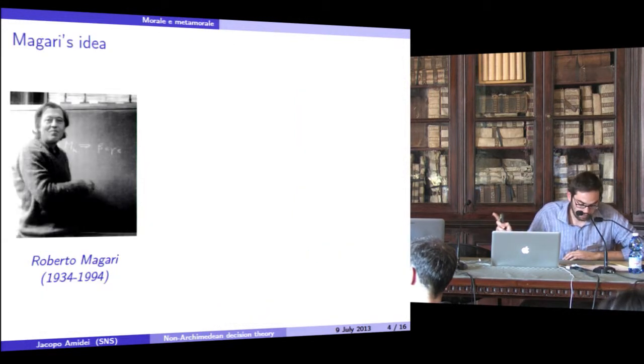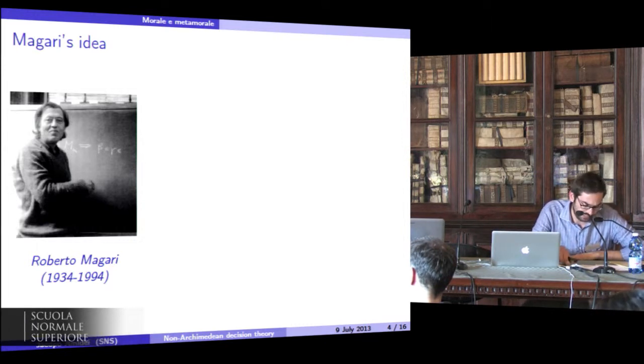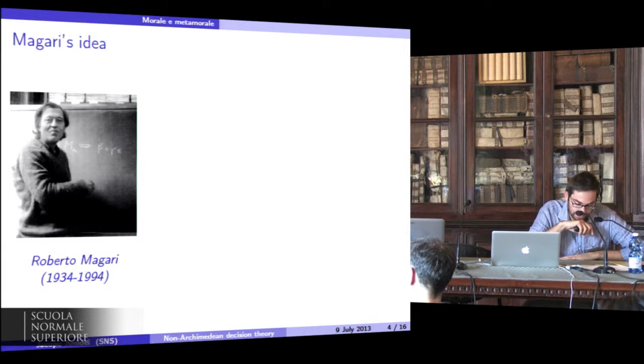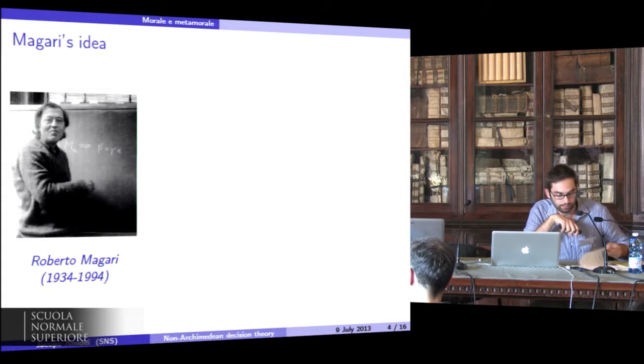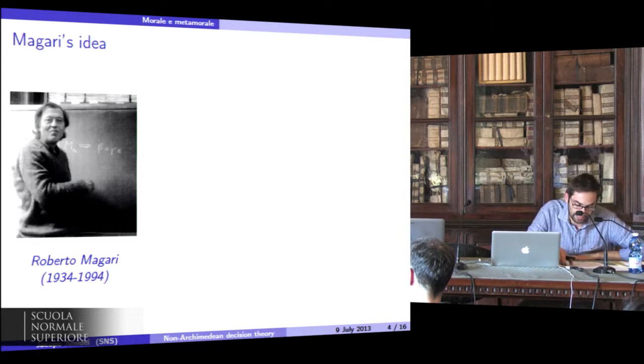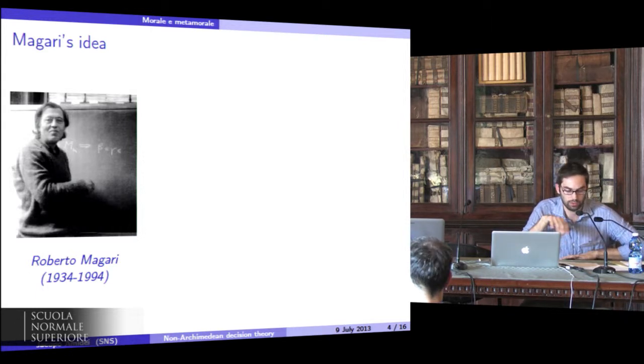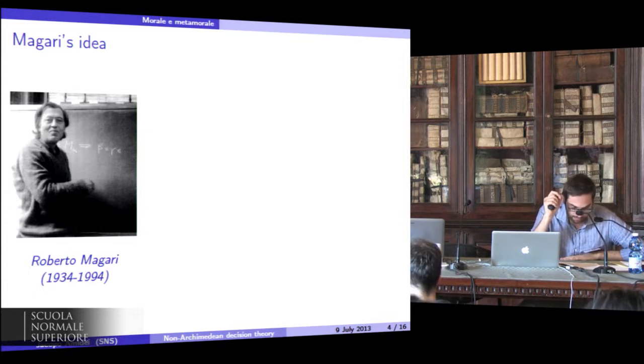Now, Roberto Magari was a very important logician and algebraist. He was the creator of the algebraic structure that allowed dealing with diagonal phenomena in arithmetic theory using algebraic tools. In his honor, these algebras are today called Magari's algebras. Roberto Magari was also interested in philosophy and morals, and the book Morale e Metamorale collects some of his moral philosophy ideas.